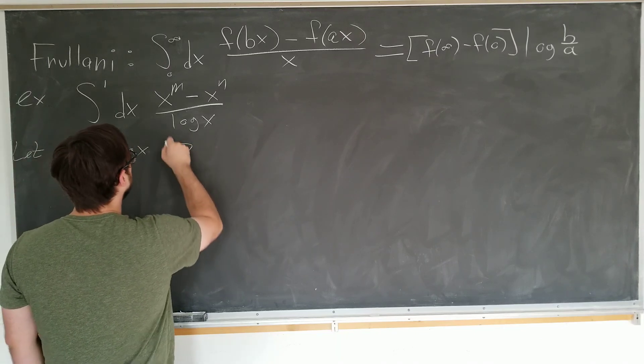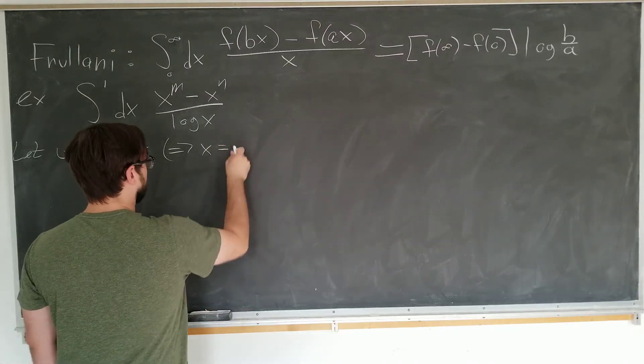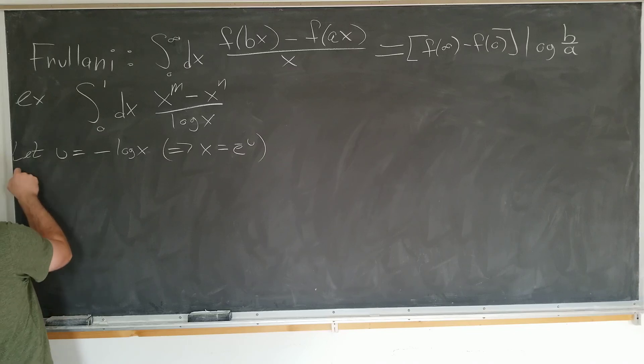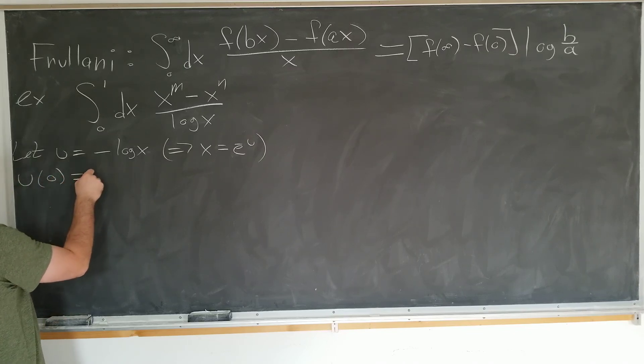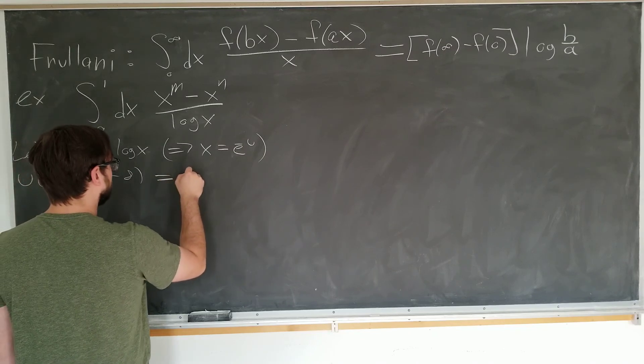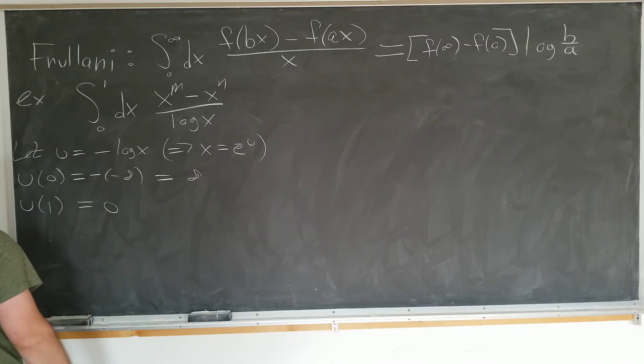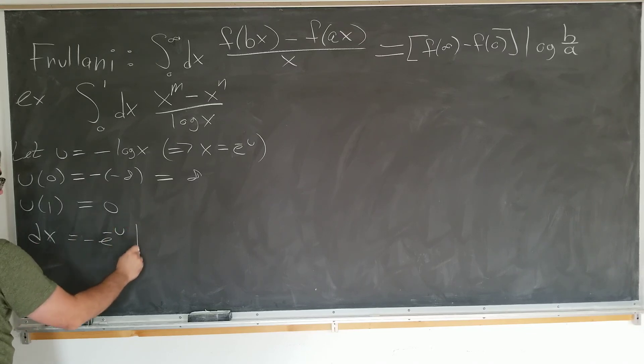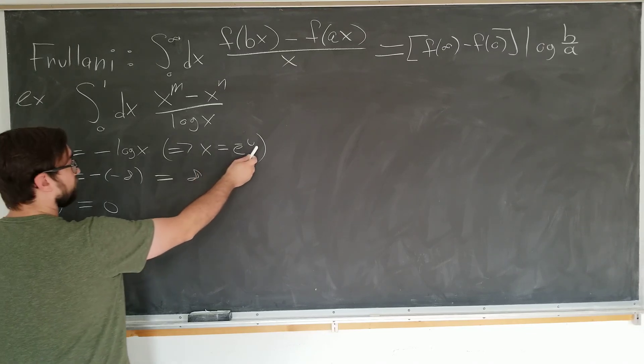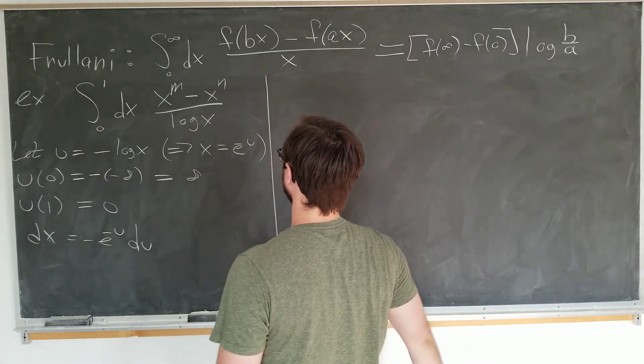This tells us, obviously, that x is equal to e to the minus u. So we'll evaluate our new limits. u of 0 is minus minus infinity, since log of 0 is minus infinity, which is plus infinity. u of 1 is minus log of 0, which is still 0. And we're going to have dx minus e to the minus u du. I took this, differentiate it, get the minus sign, du. Great.